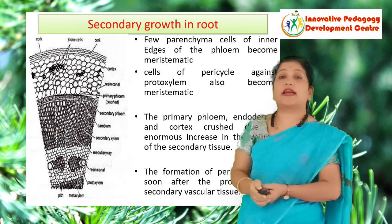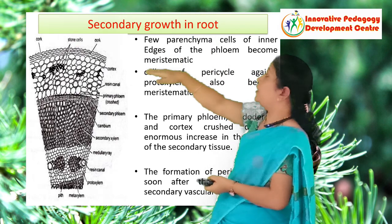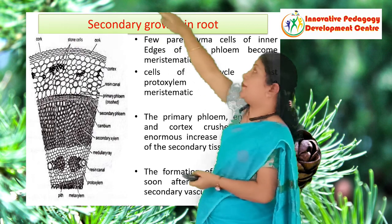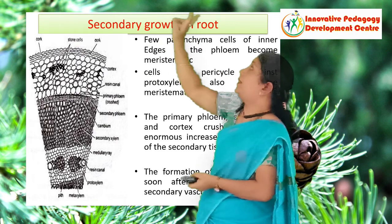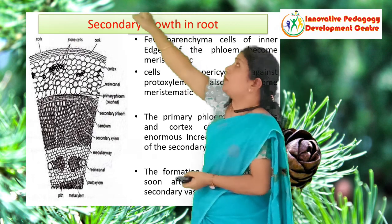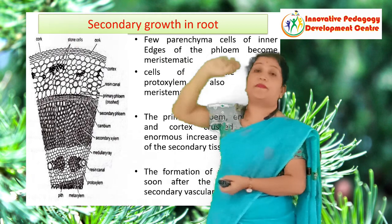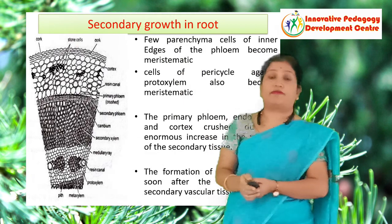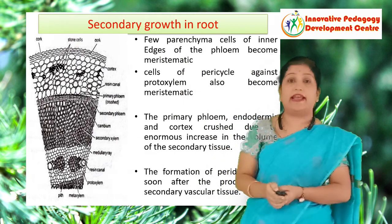You can clearly see that the tissue from the endodermis up to the epidermis is much reduced and the cork is now the final protecting layer.